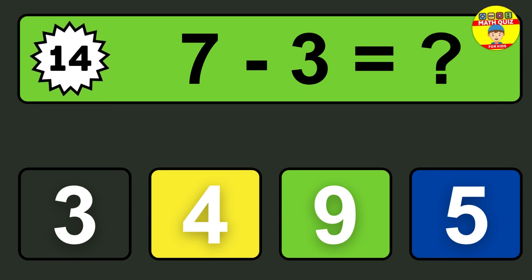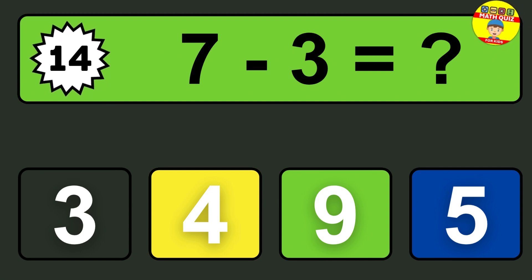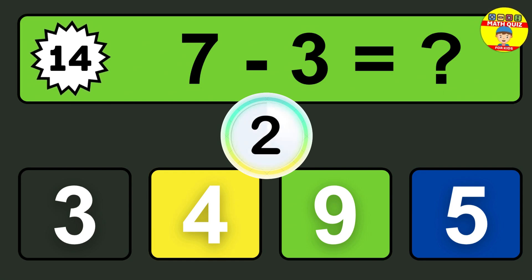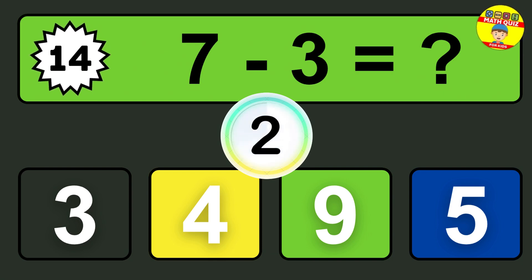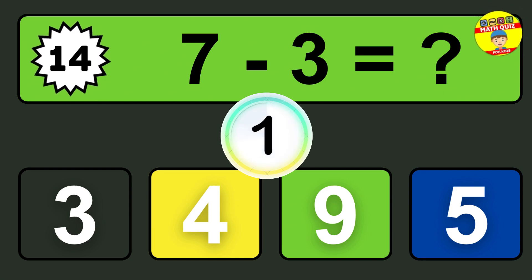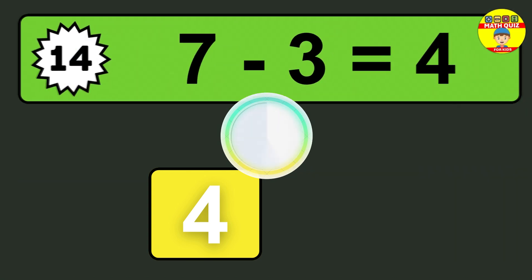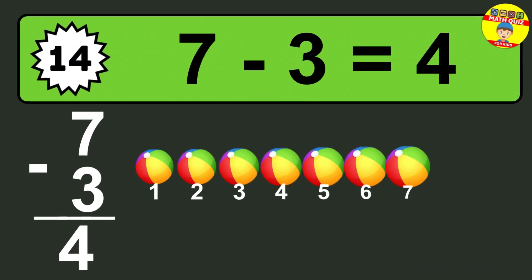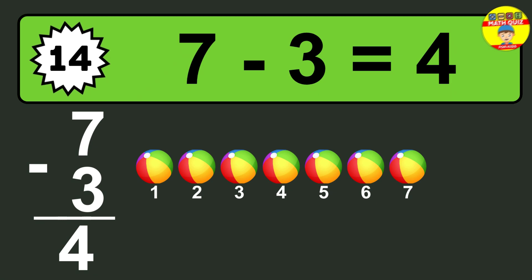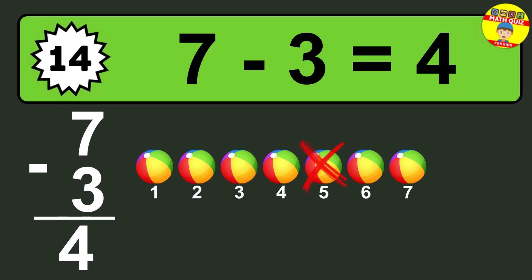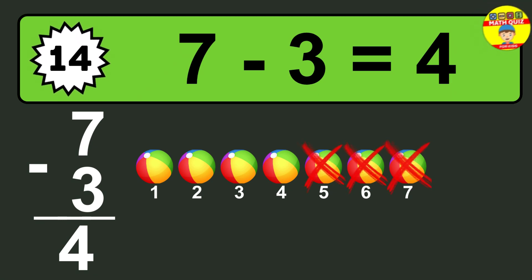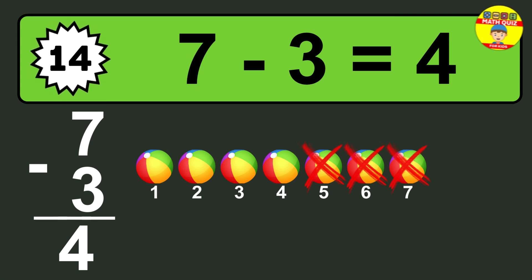Question fourteen: seven minus three equals what? So the answer is seven minus three is four.